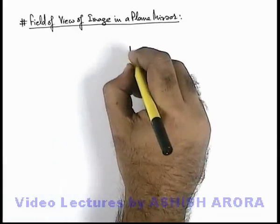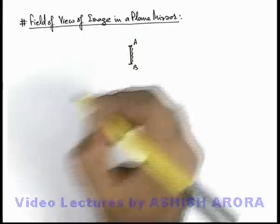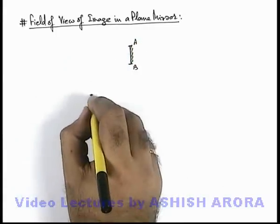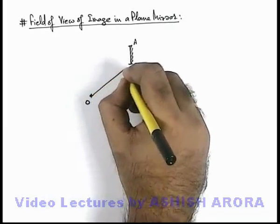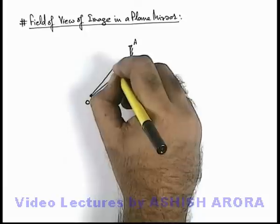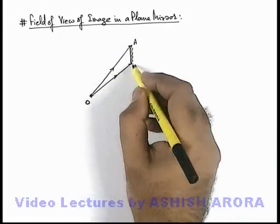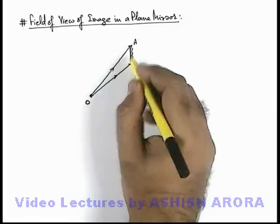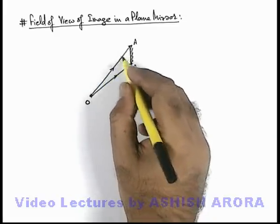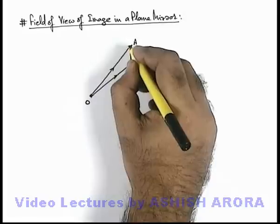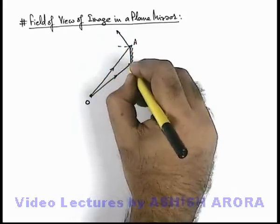If we understand it with a simple example: we are given a plane mirror AB, and in front of it an object is placed somewhere. From the object, those light rays which are incident on the mirror between lines OA and OB — considering two light rays, one OA and the other OB, which are incident on the edges of the mirror — so all light rays incident from the object onto the mirror between OA and OB will be reflected.